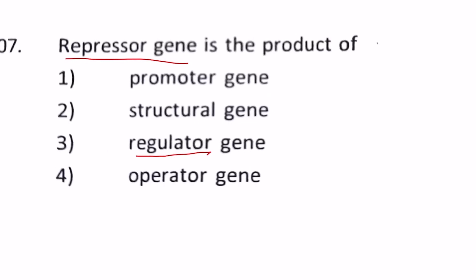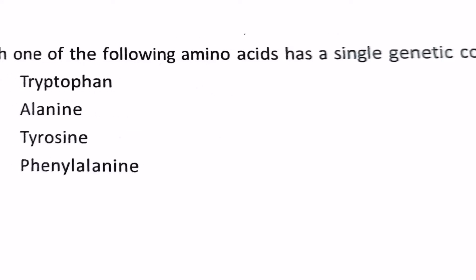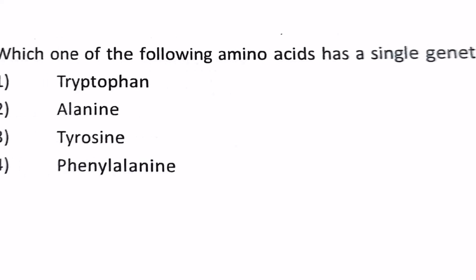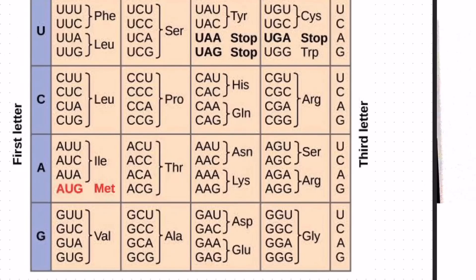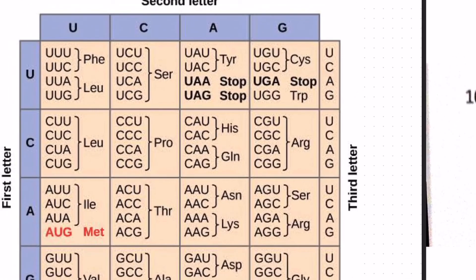Next question: which one of the following amino acids has a single genetic code? 1) tryptophan, 2) alanine, 3) tyrosine, 4) phenylalanine. Now if you have memorized the genetic chart codon chart then you will know the answer is tryptophan clearly. We'll just give you a reference. Phenylalanine has two, alanine has two or four, tryptophan has only one. So our answer is tryptophan.